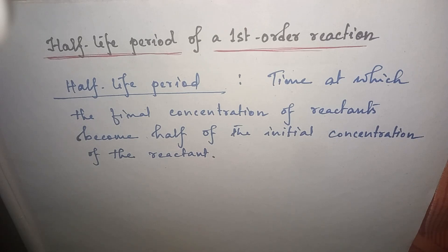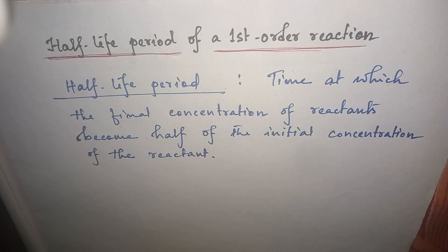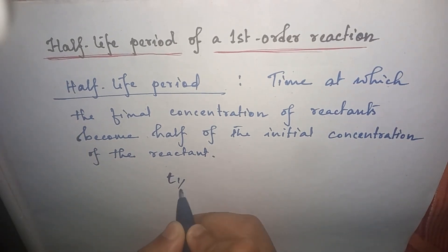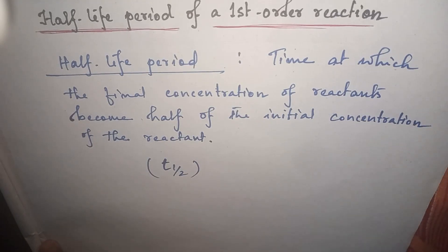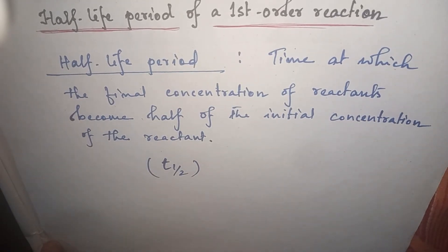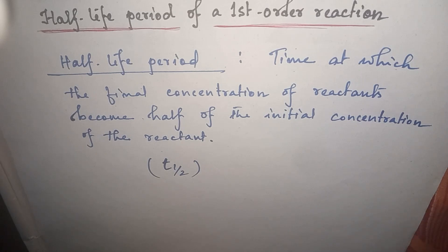The time at which the final concentration of the reactant becomes half of the initial concentration of the reactant, that time is called half-life period of any reaction. We denote this half-life period by T half. Now let's derive the formula from the rate constant formula.